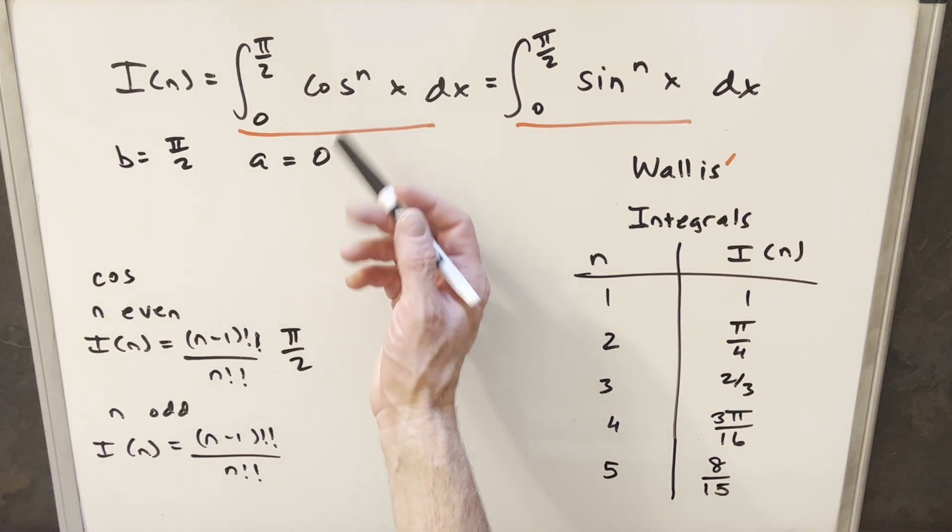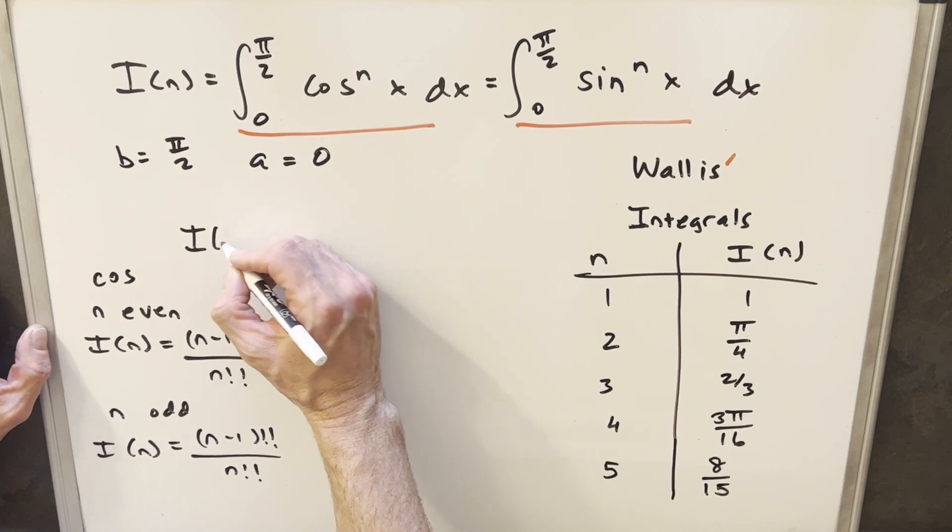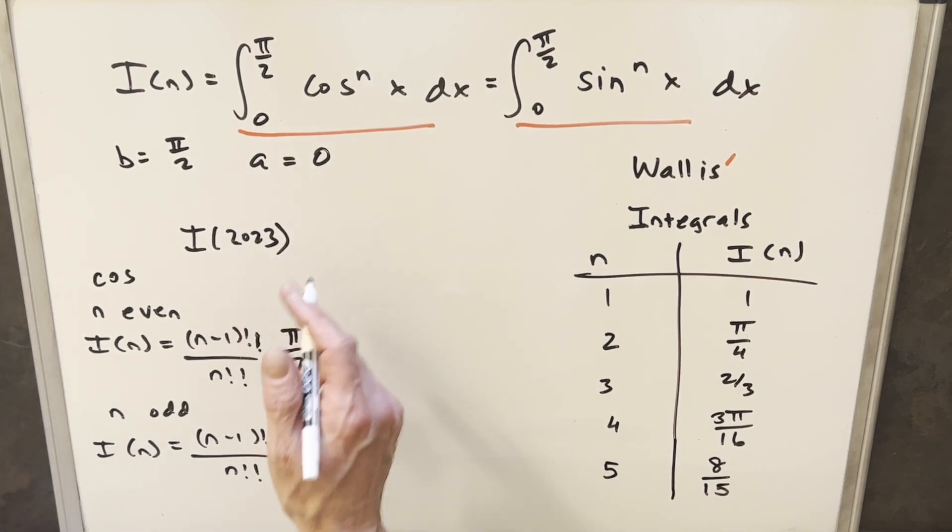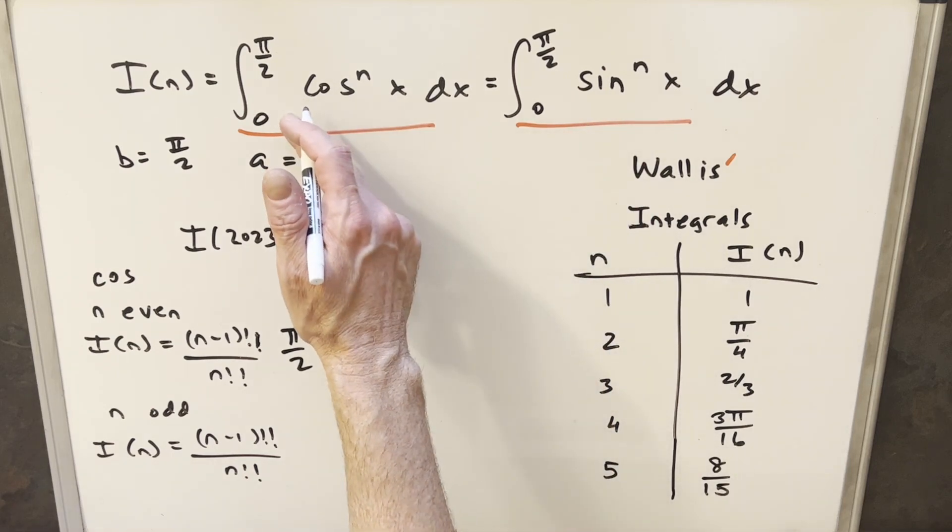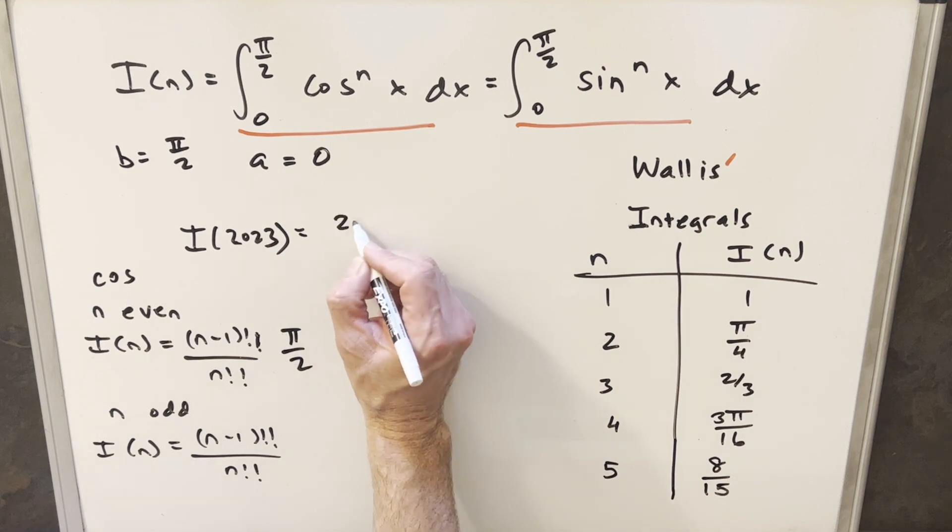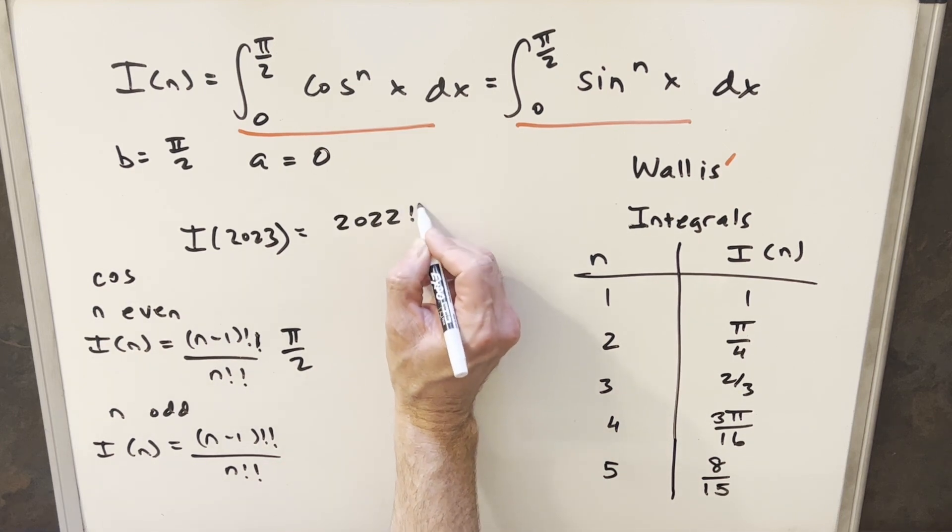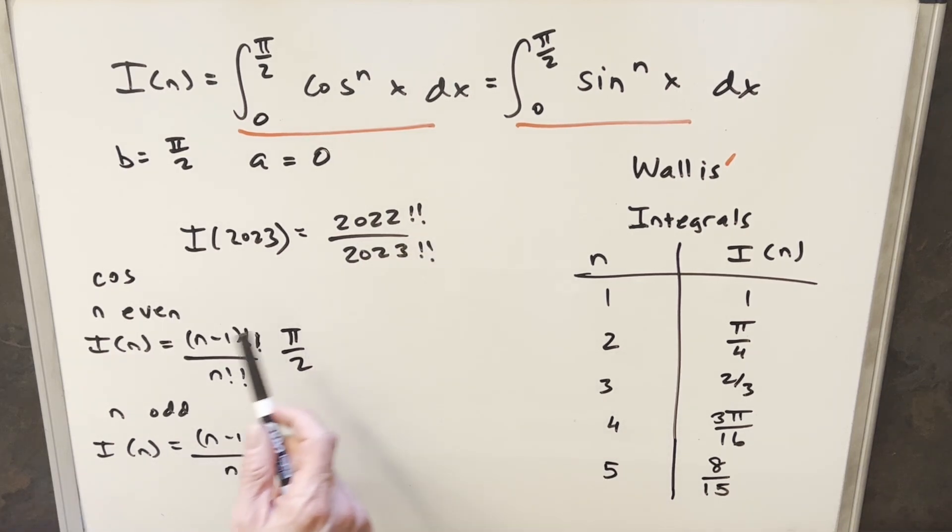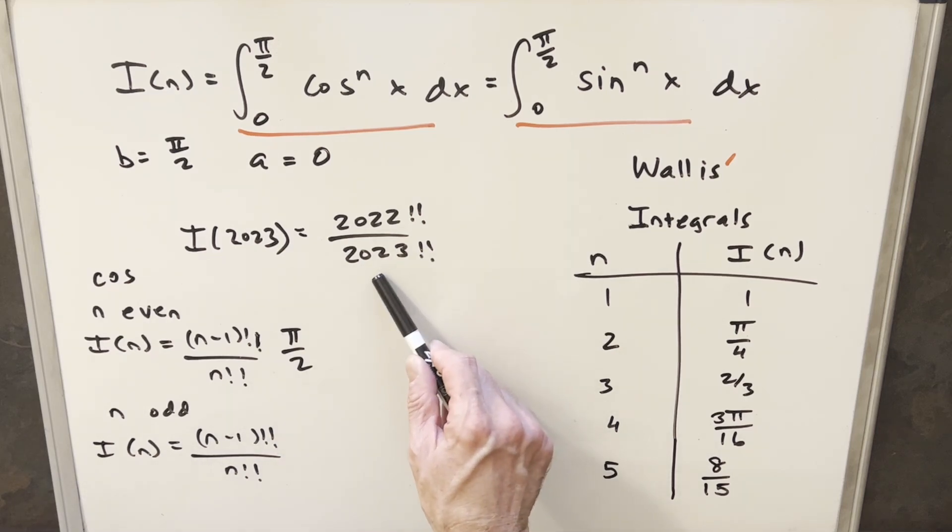So let's just say we had that. Let's just say we were looking for like cosine of 2023. Right. So our I of 2023, again, it can be cosine or sine, but we just have to be integrating from 0 to π over 2. Now, 2023 is odd. So we just use this formula down here. So this would be 2022 double factorial over 2023 double factorial. And of course, multiplying this out would be a nightmare, but we could leave it in this form. Or we have some other formulas to express this in different ways.